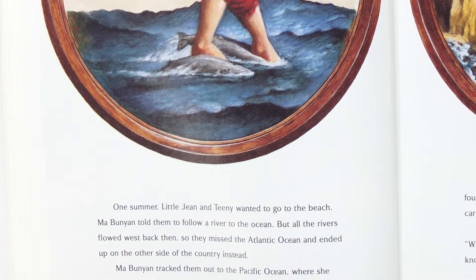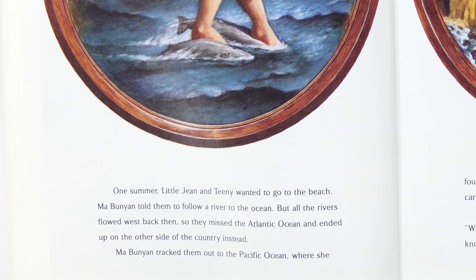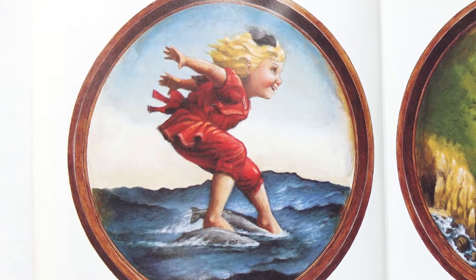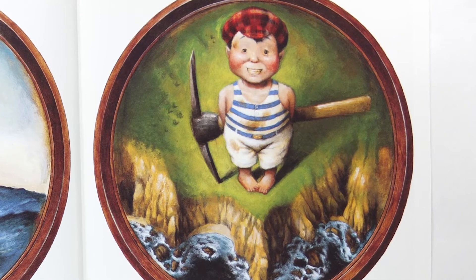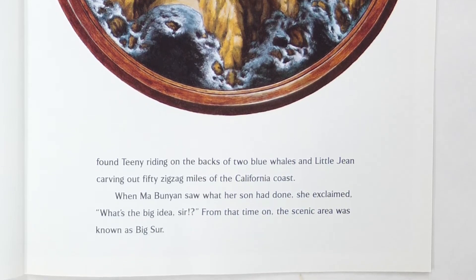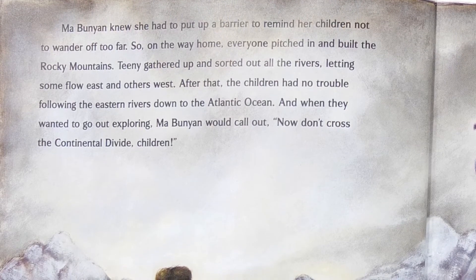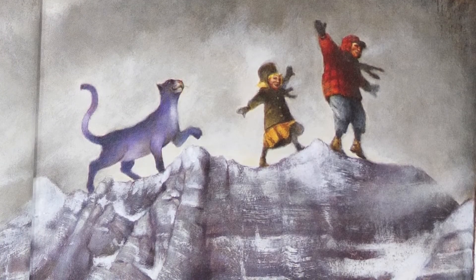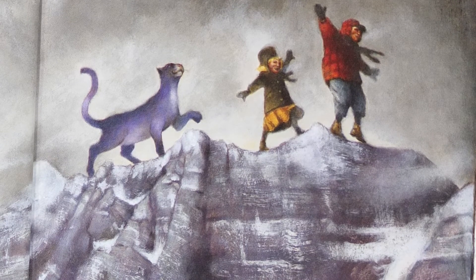One summer, Little Jean and Teenie wanted to go to the beach. Ma Bunyan told them to follow a river to the ocean, but all the rivers flowed west back then, so they missed the Atlantic Ocean and ended up on the other side of the country instead. Ma Bunyan tracked them out to the Pacific Ocean, where she found Teenie riding on the backs of two blue whales and Little Jean carving out 50 zigzag miles on the California coast. When Ma Bunyan saw what her son had done, she exclaimed, "What's the big idea, sir?" From that time on, the scenic area was known as Big Sur. Ma Bunyan knew she had to put up a barrier to remind her children not to wander off, so on the way home, everyone pitched in and built the Rocky Mountains. Teenie gathered up and sorted the rivers, letting some flow east and others west. After that, the children had no trouble following the eastern rivers down to the Atlantic Ocean.